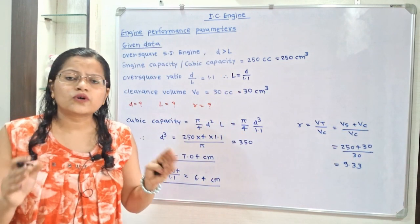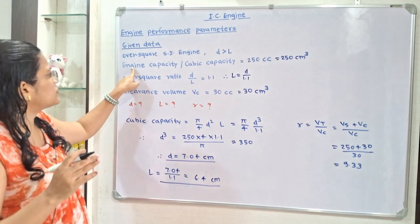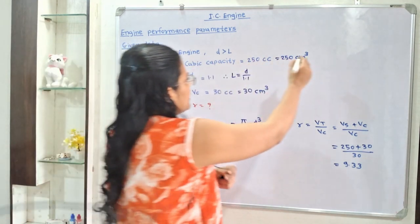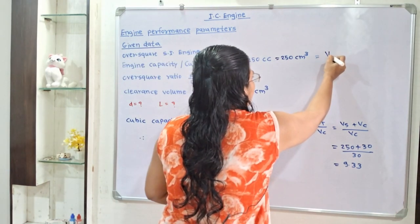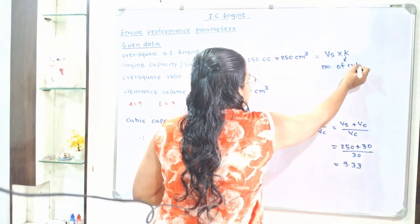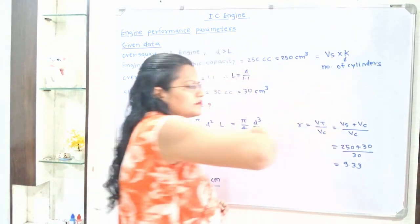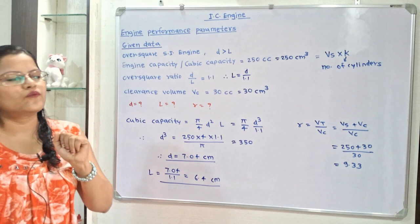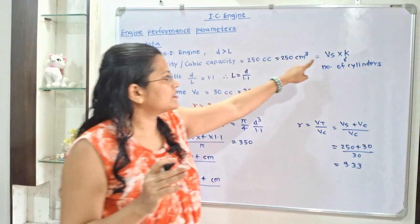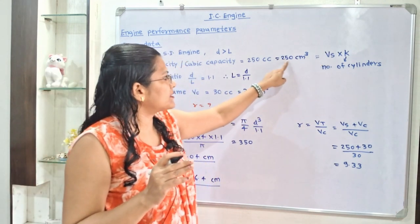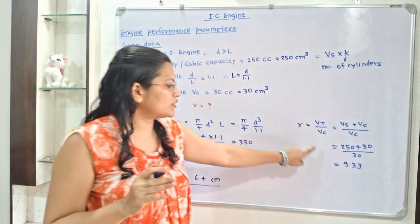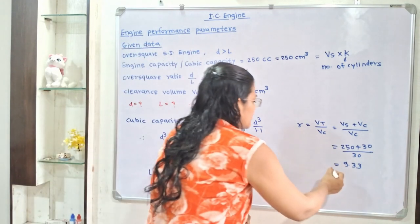Stroke volume Vs is also not directly mentioned, but engine capacity or cubic capacity equals Vs multiplied by K, where K is the number of cylinders. Since this is a single-cylinder engine, K equals 1, so cubic capacity equals Vs. Therefore Vs equals 250 cc. The compression ratio is then 250 plus 30 divided by 30, giving a compression ratio of 9.33.